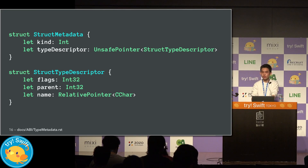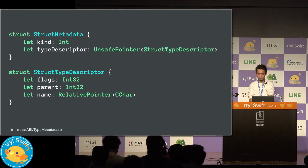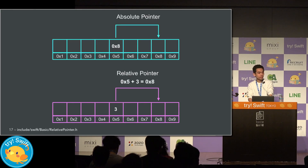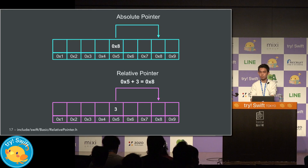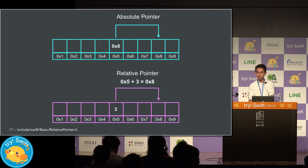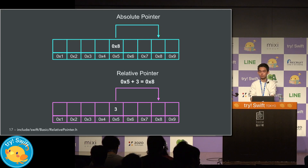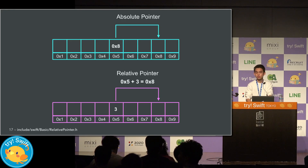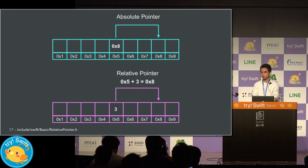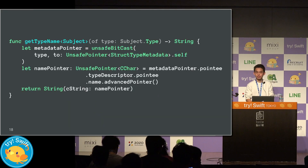Then, we need to understand relative pointers to reproduce the memory layout. A relative pointer is not just a pointer. A basic absolute pointer has the address to the referent, but a relative pointer has the offset from its own address to the referent address. It works by reading the offset and advancing from its own address. Using a relative pointer instead of an absolute pointer reduces relocation. Now that we've finished preparing, let's extract the typename.